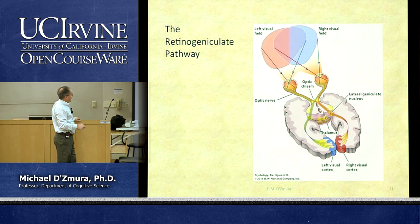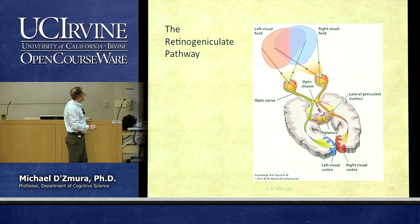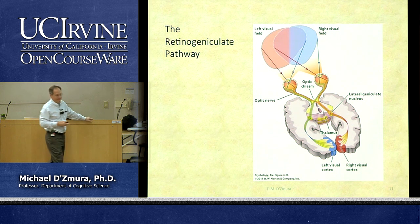Here we have lateral geniculate nuclei in the thalamus, superior colliculi, inferior colliculi, and medial geniculate nucleus. The important point is that there is a major projection from the lateral geniculate nucleus to primary visual cortex on either side of the brain.